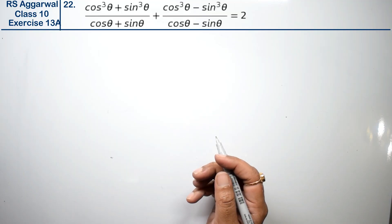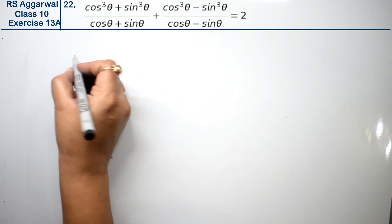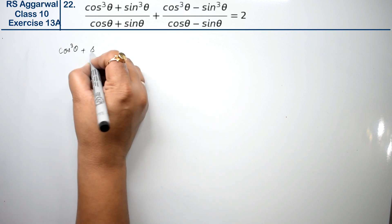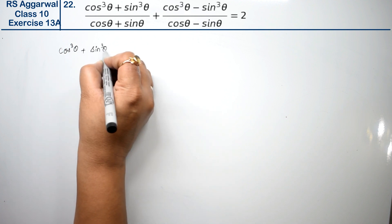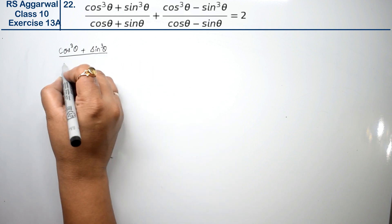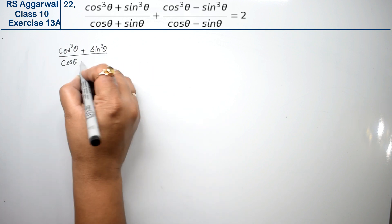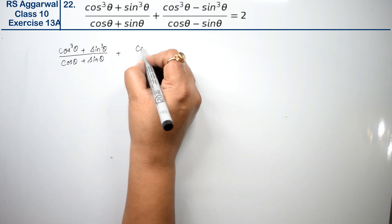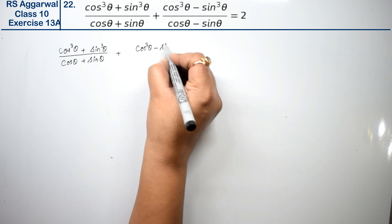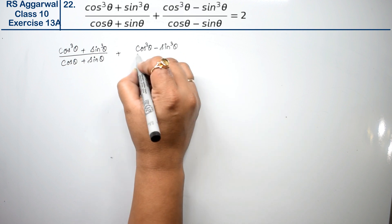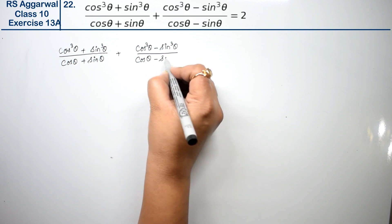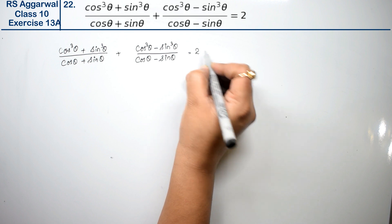Let's do question number 22 of exercise 13A, that is Trigonometric Identities. Question number 22 is: (cos³θ + sin³θ) / (cosθ + sinθ) + (cos³θ - sin³θ) / (cosθ - sinθ) equals 2. Prove this.